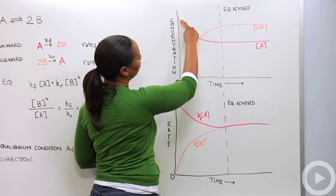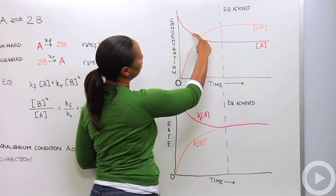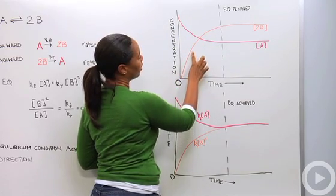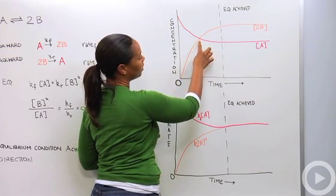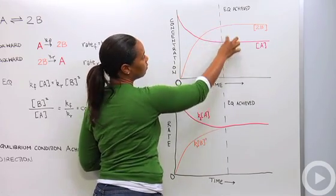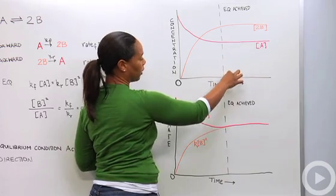We started with A so our reactants, we start to lose the concentration of our reactants starts to decrease as the concentration of our products B starts to increase and at some point they become equal and that's when we know we've achieved equilibrium.